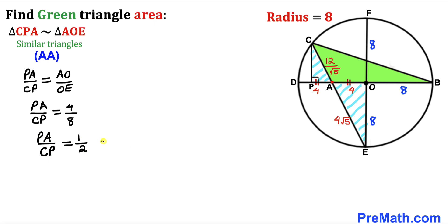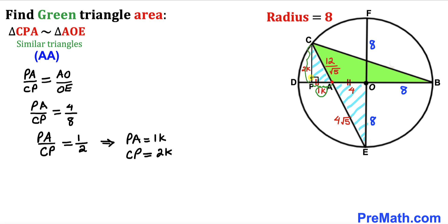Therefore PA = 1 × k and CP = 2 × k for some constant k. So the PA length is k and the CP length is 2k.